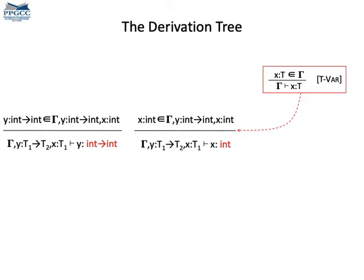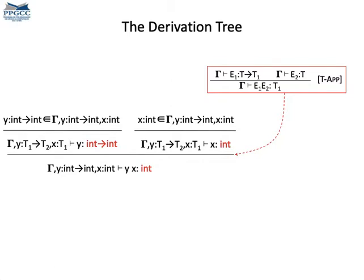And we can combine the types of Y and X to have the type of the application of Y upon X. If Y is a function of int to int and X is int, then the result of passing X to Y is an integer. Thus, this application has type int.